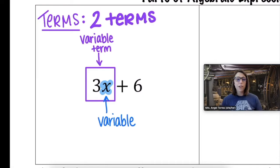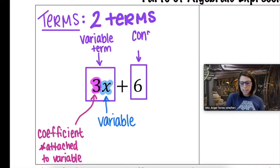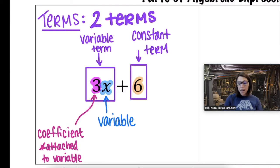The other part of the variable term is the 3. The 3 being attached to the variable is called the coefficient. Now what about our second term in this expression? 6. 6 is just an integer, but in an algebraic expression we have a more specific name for that. 6 is called the constant term and that word constant means not attached to a variable.